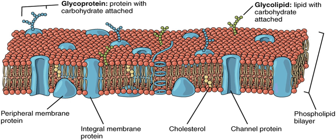For all cells, membrane fluidity is important for many reasons. It enables membrane proteins to diffuse rapidly in the plane of the bilayer and to interact with one another, as is crucial in cell signaling. It permits membrane lipids and proteins to diffuse from sites where they are inserted into the bilayer after synthesis to other regions of the cell. It allows membranes to fuse with one another and mix their molecules, and it ensures that membrane molecules are distributed evenly between daughter cells when a cell divides. If biological membranes were not fluid, it is hard to imagine how cells could live, grow, and reproduce.